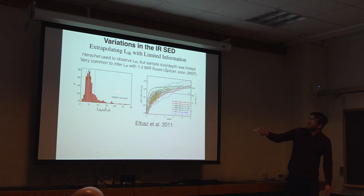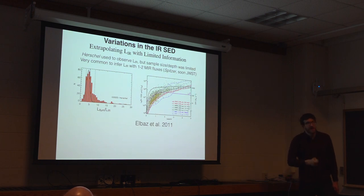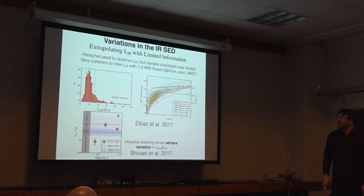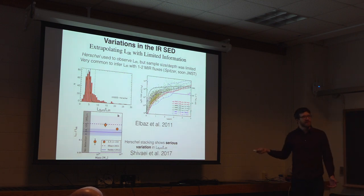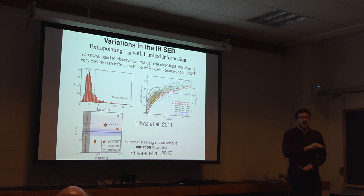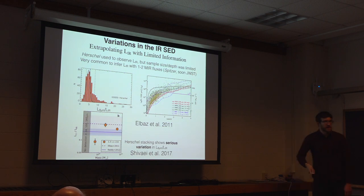This is just talking about the random uncertainties for bright galaxies. You can actually take these same Herschel data and try to do the same sort of analysis for very faint galaxies by stacking the non-detections.